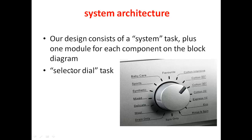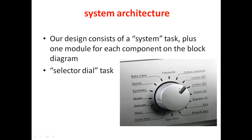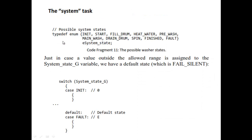In a switch case program, there will be a case for each option. Baby care will have a number, sports will have a number, synthetic will have a number, mixed will have a number, wool, dry, rinse, echo — all will have individual numbers. If the knob is kept at a particular position, we will check each number and if that matches, then that particular program will be called. In the system task, you will start your program and declare all the states which are there. You identify what the state is, and based upon the state you will execute. If you give any number beyond what has been used, it will say fault.